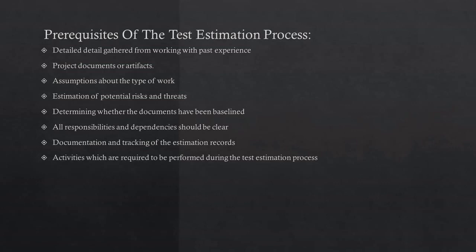Sixth, all responsibilities and dependencies should be clear. The organization should clearly define the roles and responsibilities for all persons performing the estimation process. Seventh is documentation and tracking of the estimation records — all relevant information to the estimation process should be documented. Eighth is activities required during the test estimation process: organize the activities, decompose the project into phases and constituent activities, compute the estimation based on previous project and professional experience, prioritize possible threats and come up with approaches to mitigate those risks, review and document the relevant part of the work.